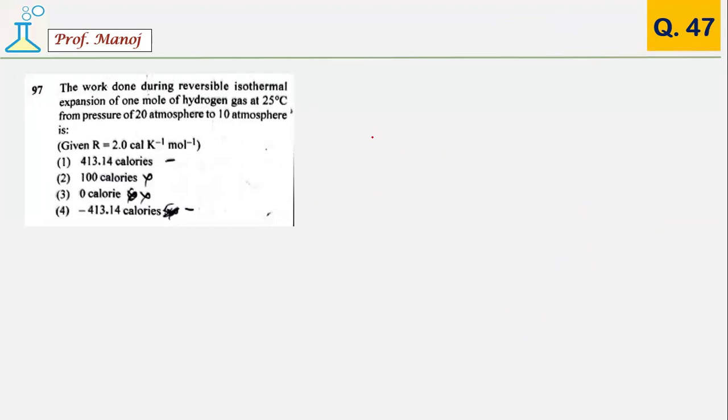The work done during reversible isothermal expansion of gas. If you are a very good observer, instead of solving, you can clearly mark the answer as 4, because expansion work is always negative and very luckily there is one single answer which is negative. By the way, if you want to really solve, it is minus 2.303 nRT log P1 upon P2. 2.303 nRT log P2 upon P1. Number of mol given is 1 mol. All answers are in calorie, they have given R as calorie. 2.98 Kelvin log 20 atmosphere to 10 atmosphere. Go on happily solving and you will get the answer this way.